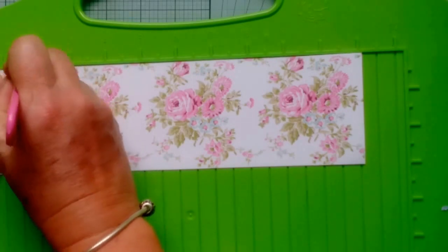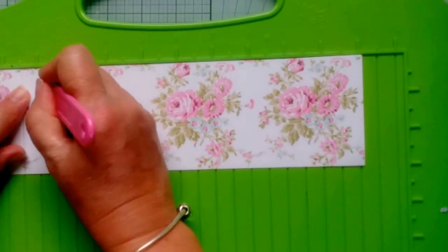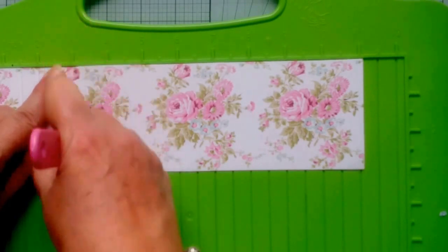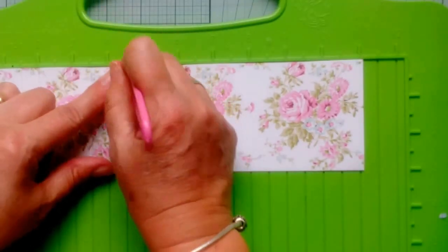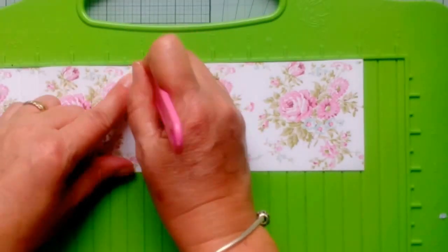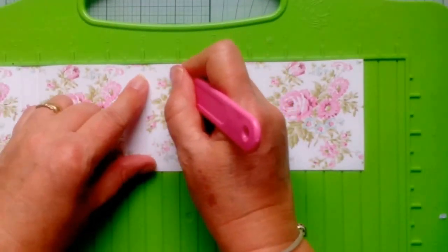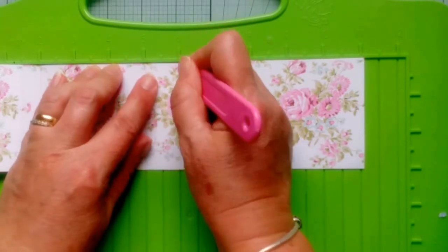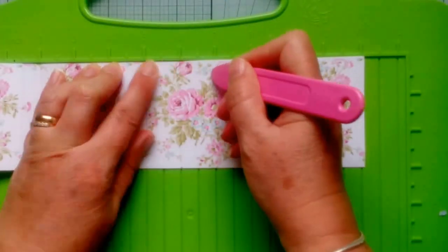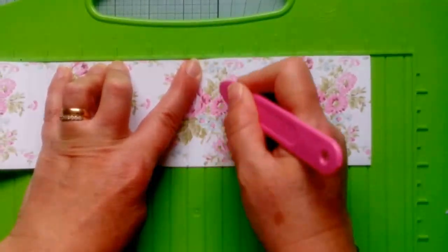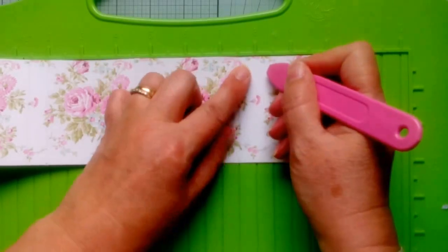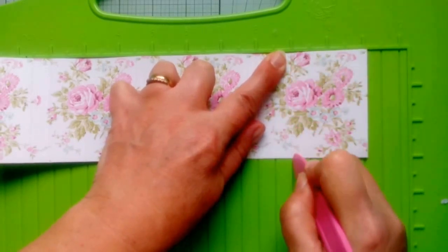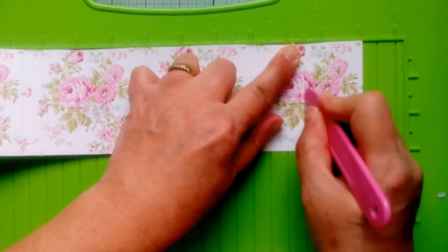So we start at 1.5 inches, and then we score again at 2, and then we go to 3 and 3.5, 4 and a half and then 5, then 6, 6 and a half, 7 and a half, 8, then to 9, and 9 and a half is your last one.